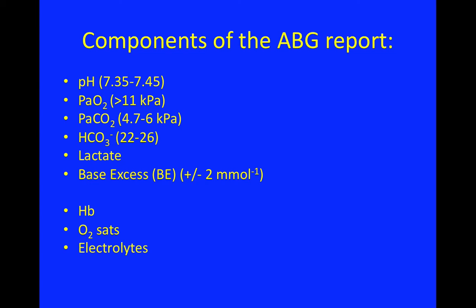Moving on to bicarbonate, with a normal range of 22 to 26. This is more the metabolic side of the ABG. Bicarbonate is alkalotic, so if you have more of it, it trends the pH to a higher level. This is sometimes also looked at in conjunction with the base excess, which really is the excess of base — so if you have a more positive base excess, you're more likely to have a metabolic alkalosis. The bicarb and the base excess tend to follow each other in that they both reflect the metabolic components of the acidaemia.